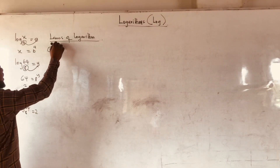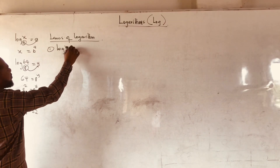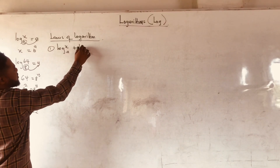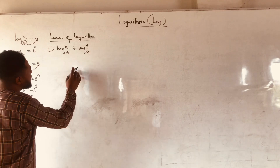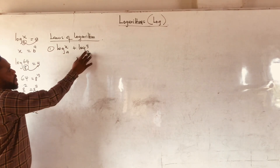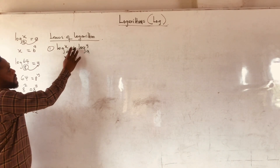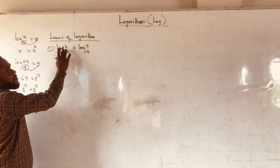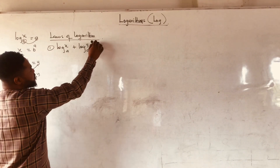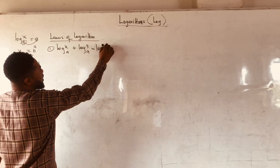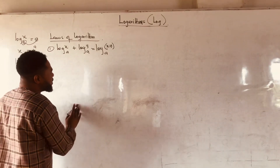If I have log x base 8 plus log y base 8 — log of the same base added — what do you do to the numbers here? You are going to multiply. So it will give you log of x multiplied by y, base 8.